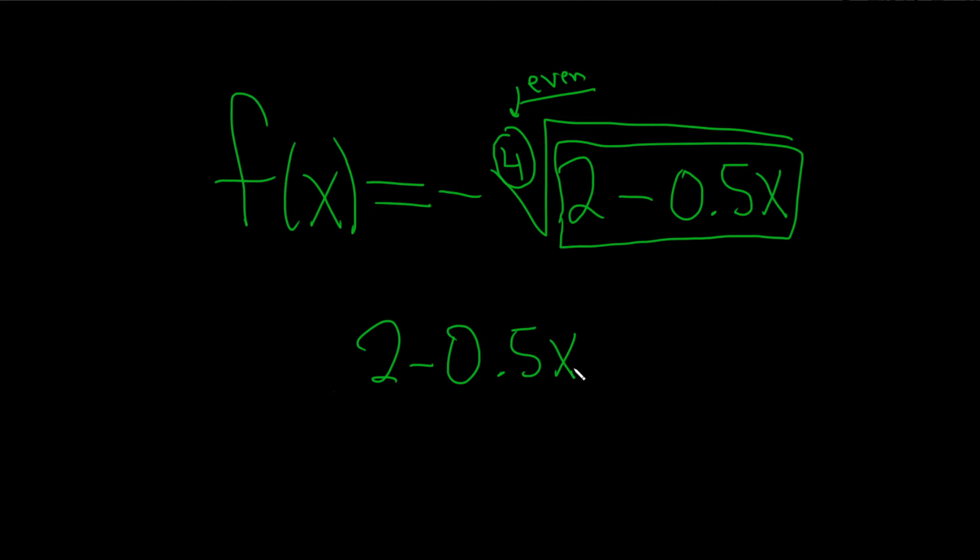If there was like a 16 here, same process. There's a 100 here, same process. If there's a 3 here, different process. In that case, whenever it's odd, it's just all real numbers.